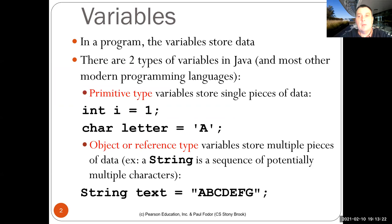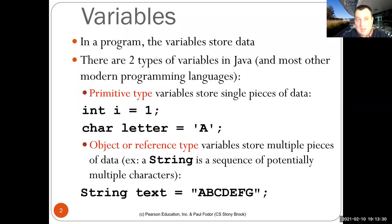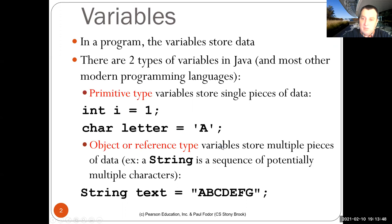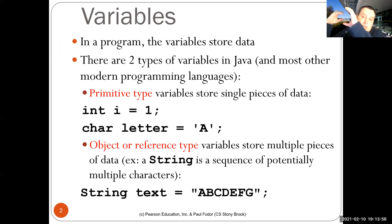In most modern programming languages like C#, there are primitive type variables where the value itself is stored in the location created for that variable — for instance, integer i equals 1, character letter equals 'a'. And there are object or reference types where the variable itself is actually a reference to another place which contains multiple values, multiple pieces of data.